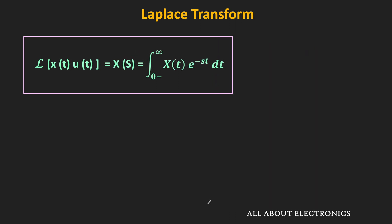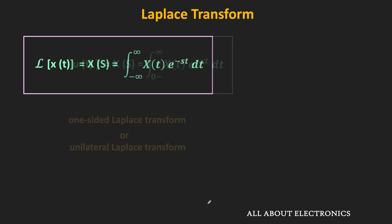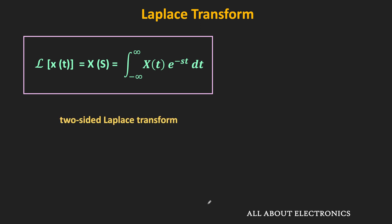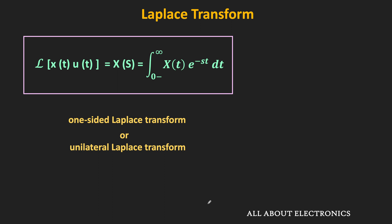This type of Laplace transform, where we integrate the signal from 0 to infinity, is known as the one-sided Laplace transform, or the unilateral Laplace transform. When we integrate the signal from minus infinity to plus infinity, it is known as the two-sided or bilateral Laplace transform. All functions we will deal with during circuit analysis exist for t greater than or equal to 0 — they are causal signals — so we are going to use the one-sided Laplace transform throughout our discussion.